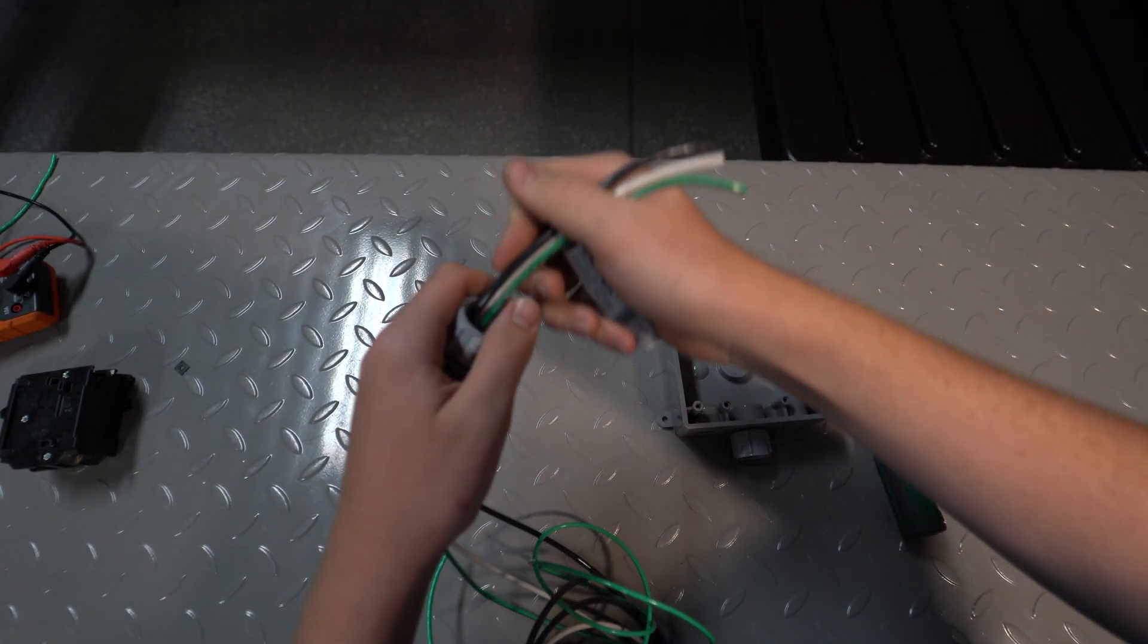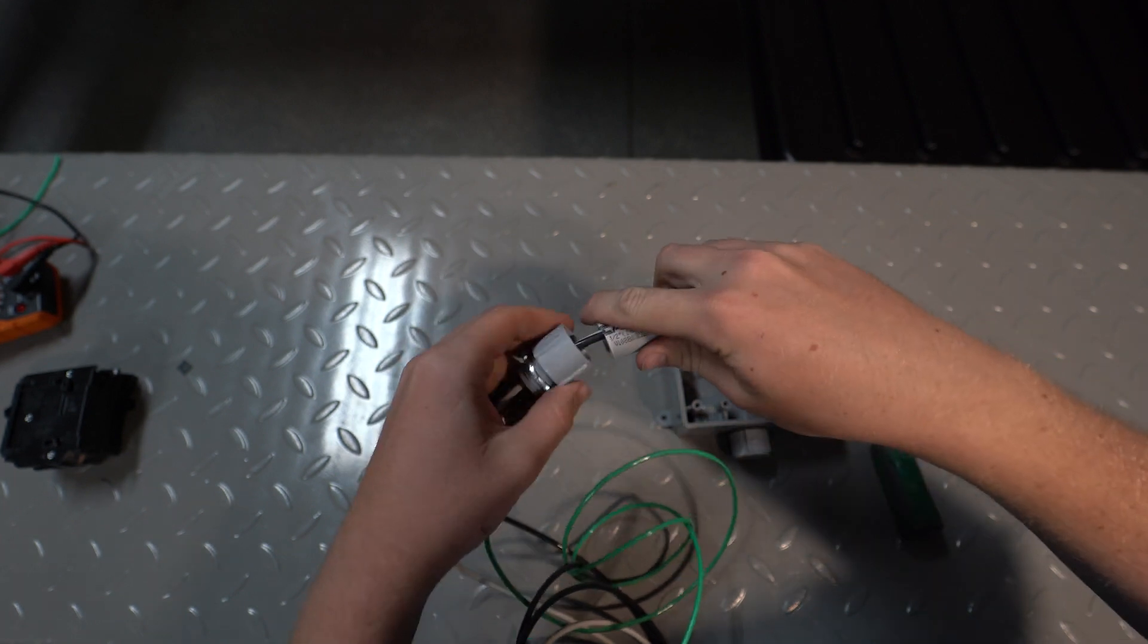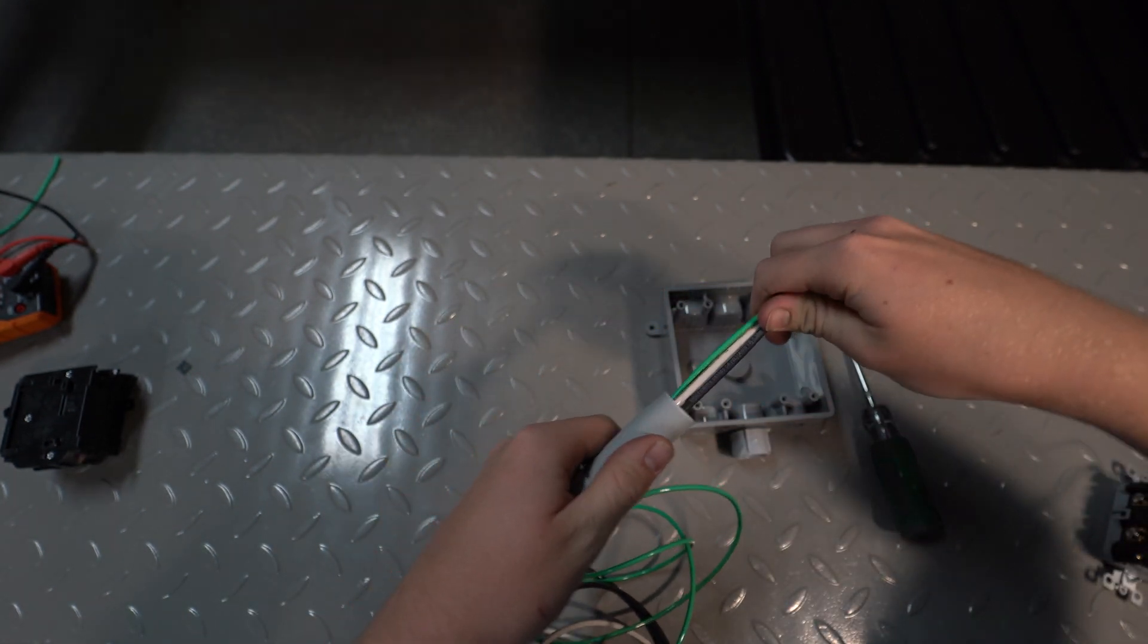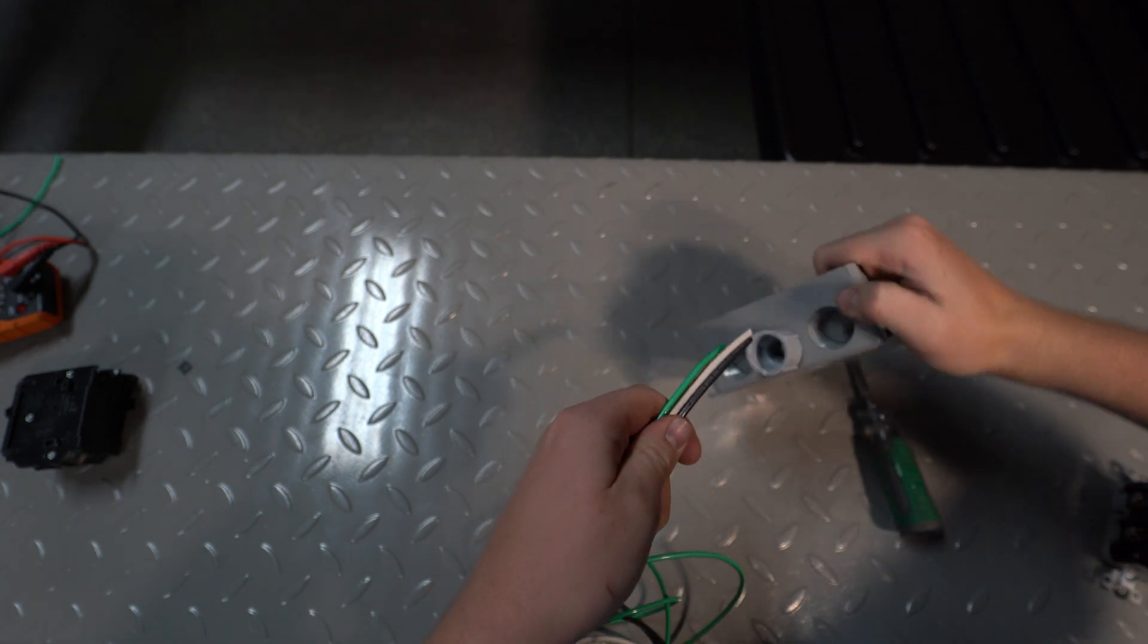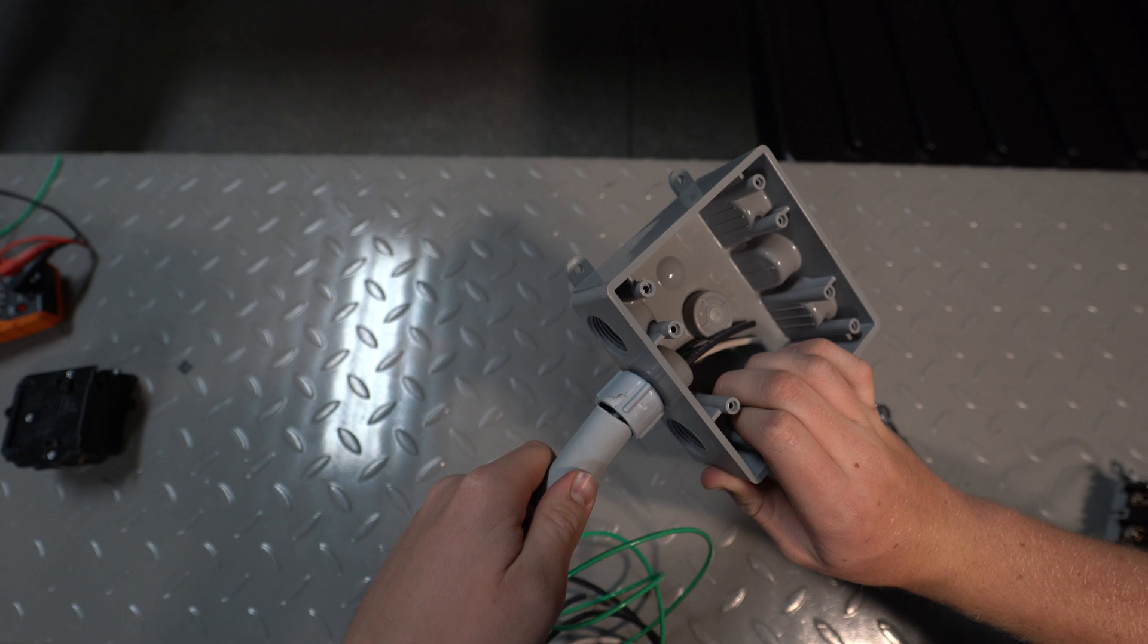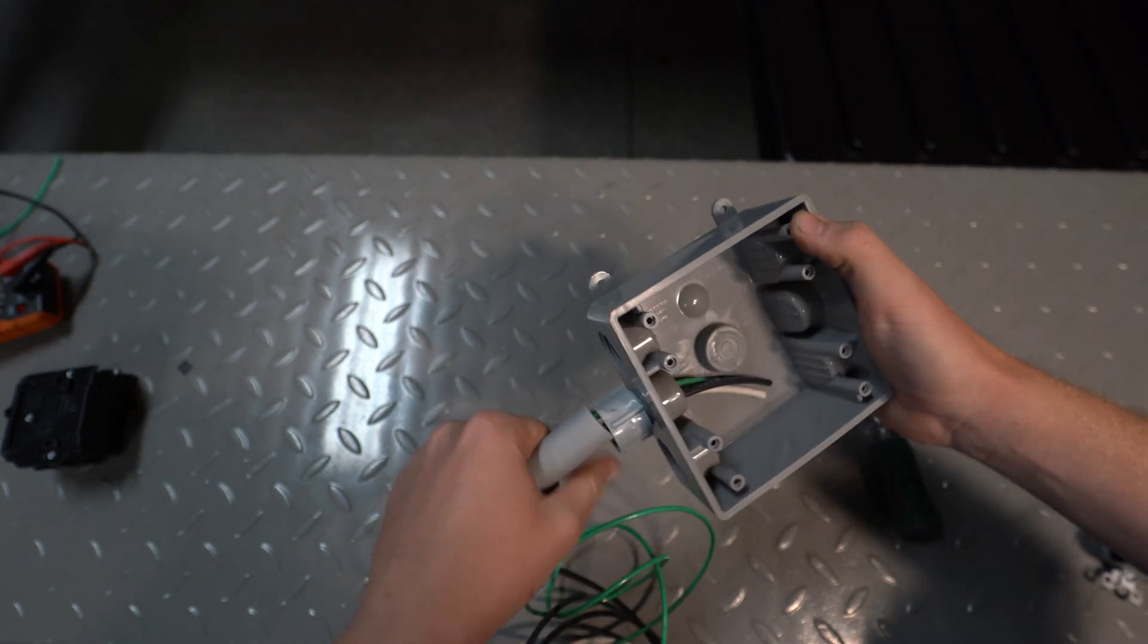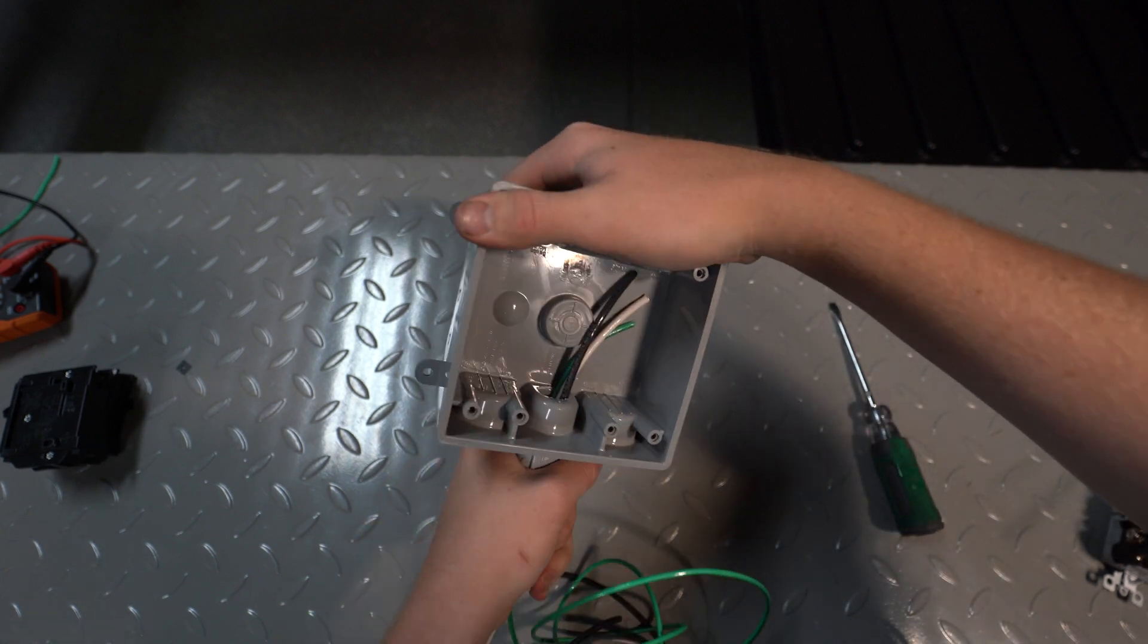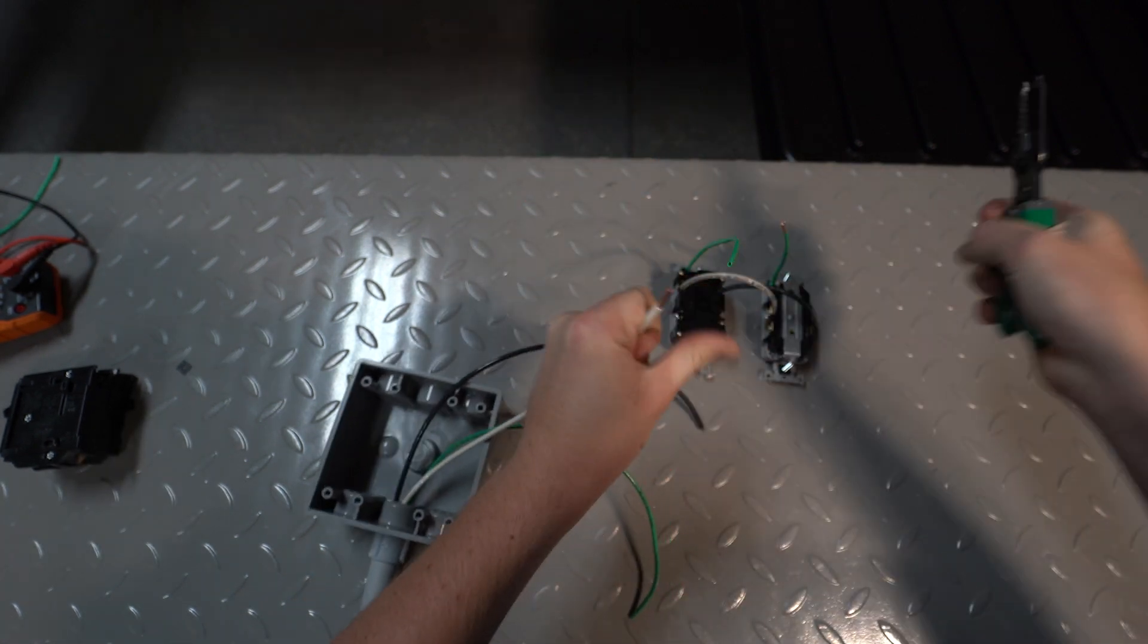Since my breaker box is extremely close to the location of this new outlet, I only ran three feet of wire. Strip the ends that are coming inside the box.